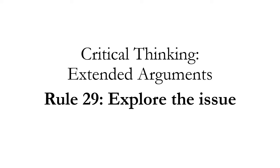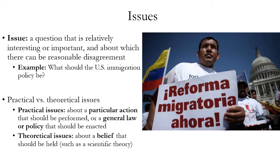Rule 29 is a rule for exploring the issue that an argument is about. An issue is a question that is relatively interesting or important and about which there can be reasonable disagreement. An example of an issue is: what should the United States immigration policy be?